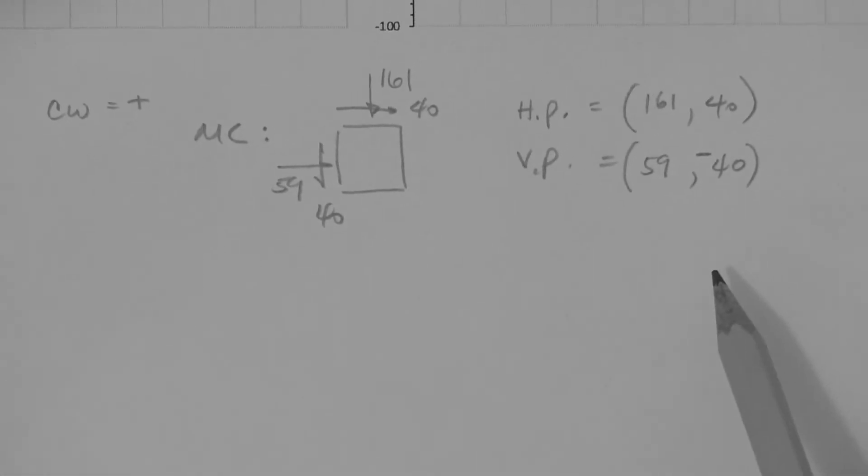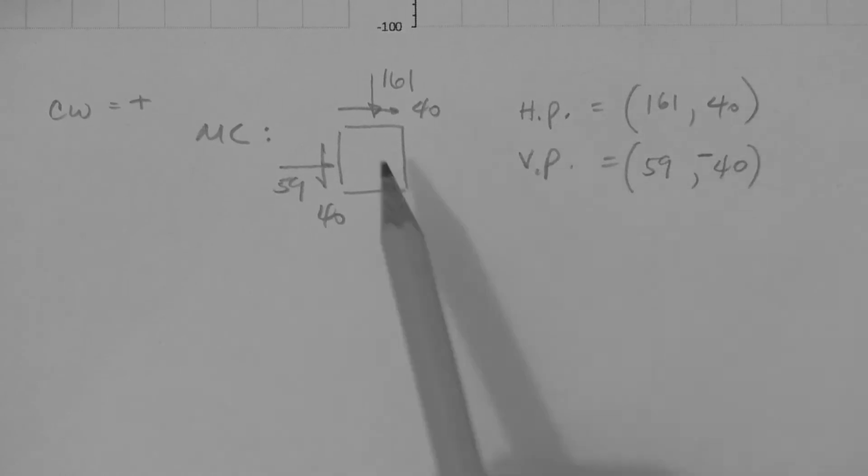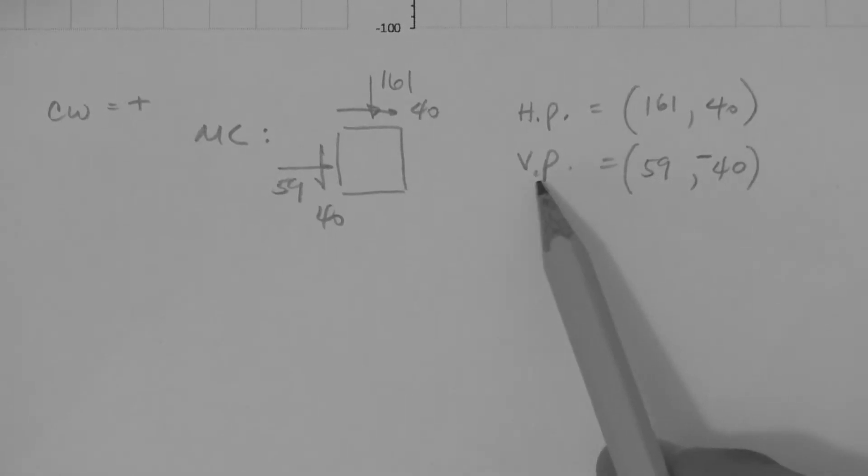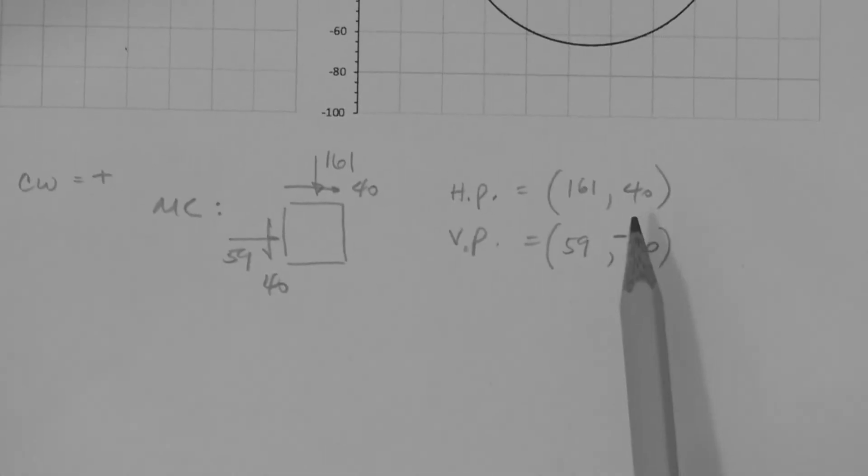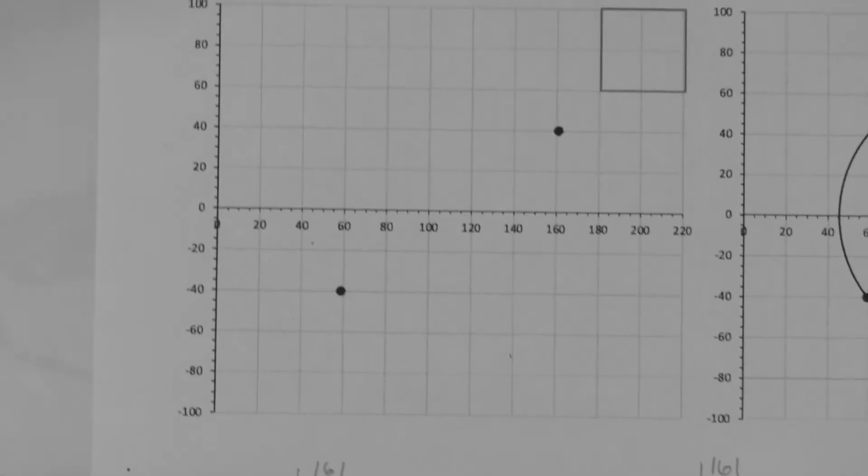So we have two coordinates. On the horizontal plane 161, 40, and on the vertical plane 59, minus 40. With these two coordinates right here we can draw the Mohr circle.